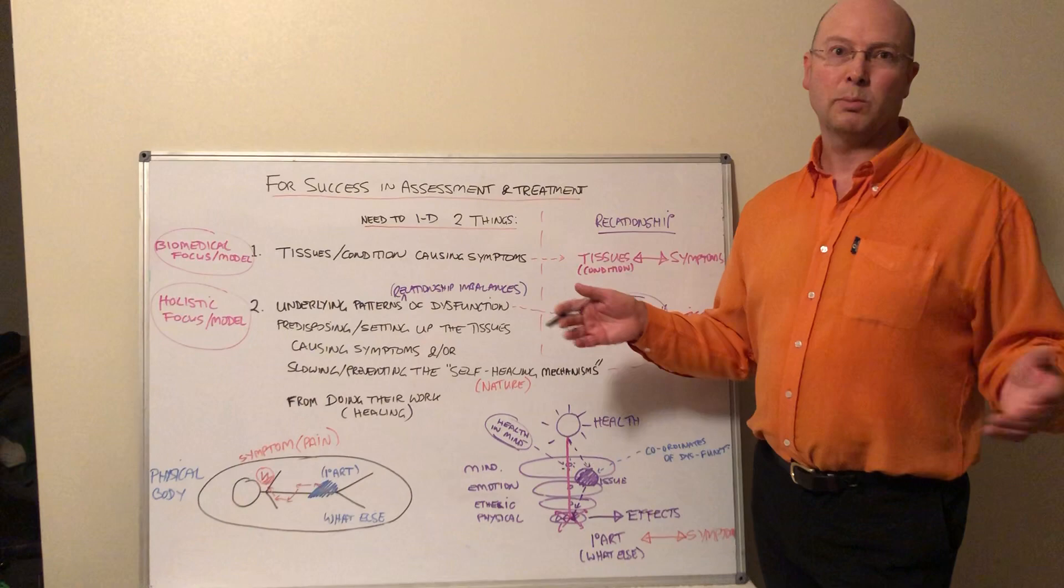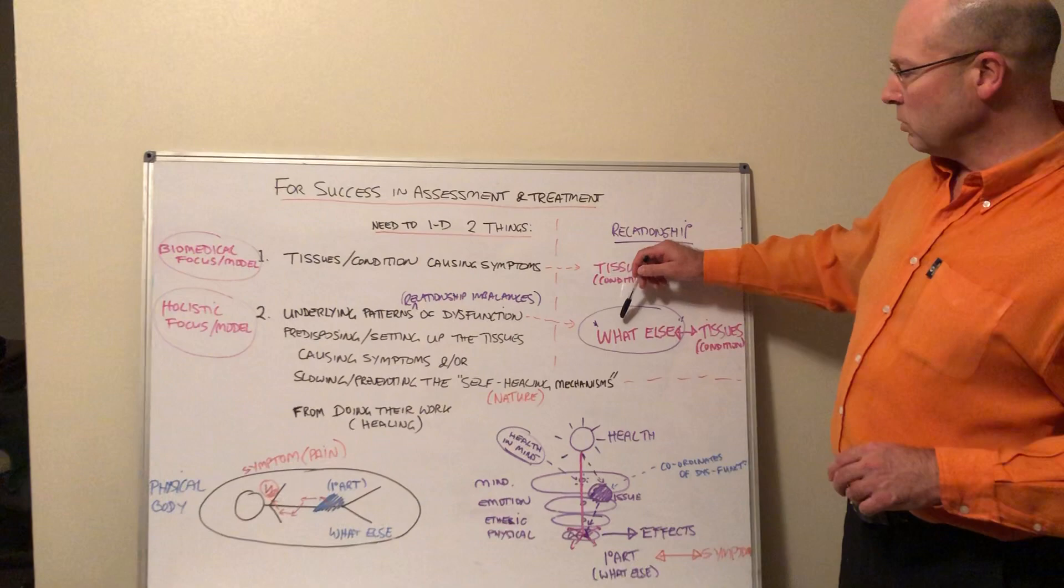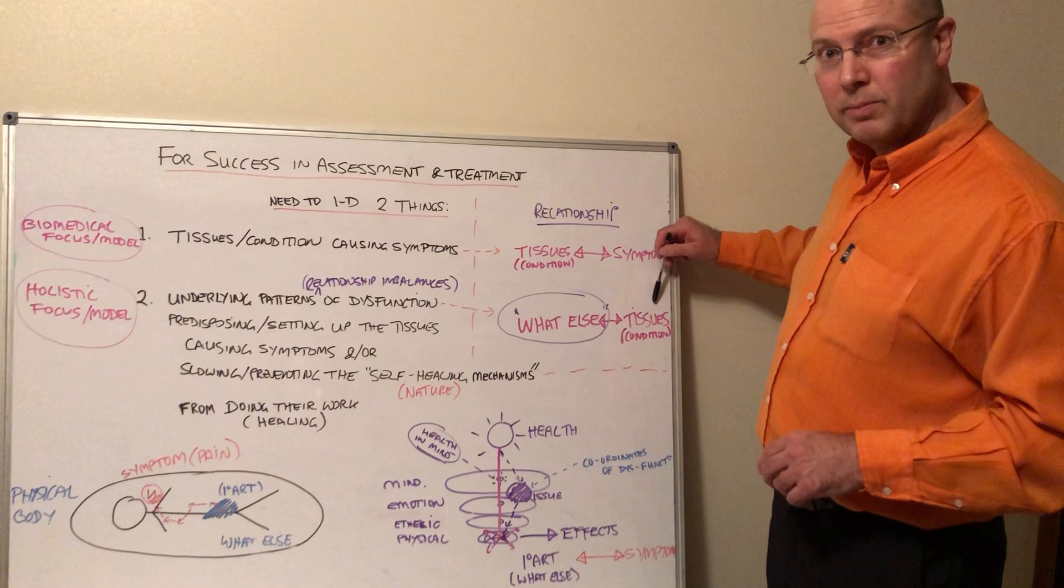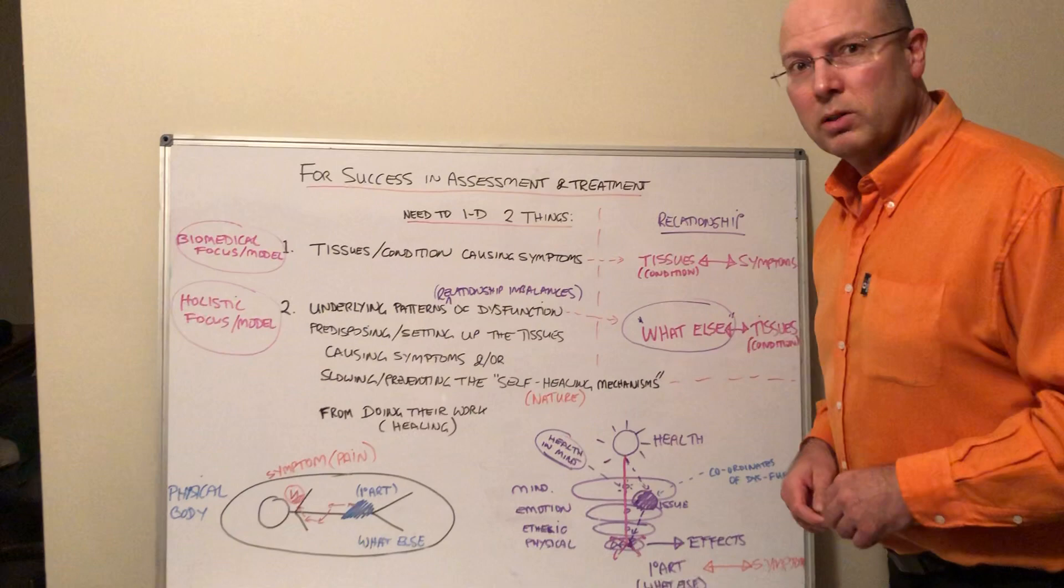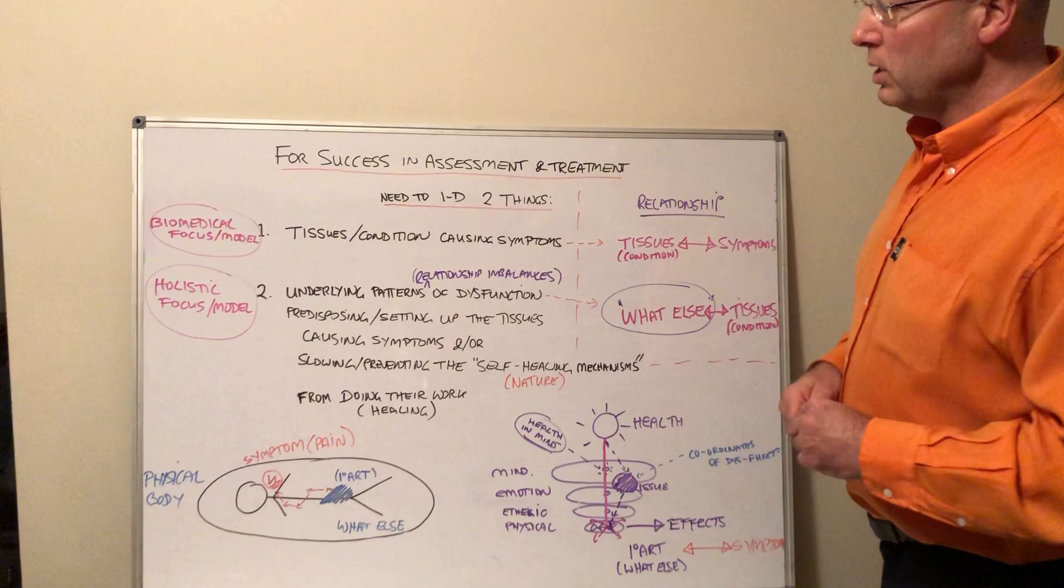If things are balanced and optimally flowing and functioning, then nature will do the work of healing to the best possible ability. When we look at that, we're looking at what else is happening inside the body and how that is affecting the tissue's recovery. That's what you see more in this holistic focus or model of assessment. You're looking to get an overall picture—you're looking at both of those relationships.